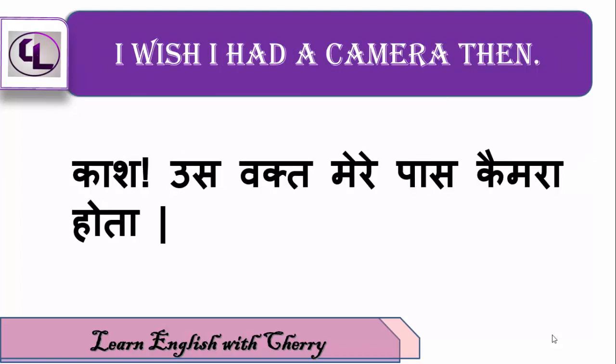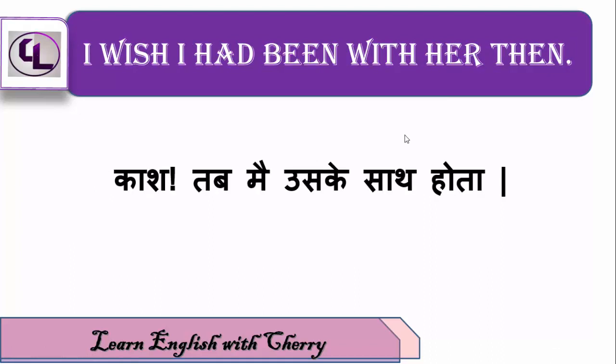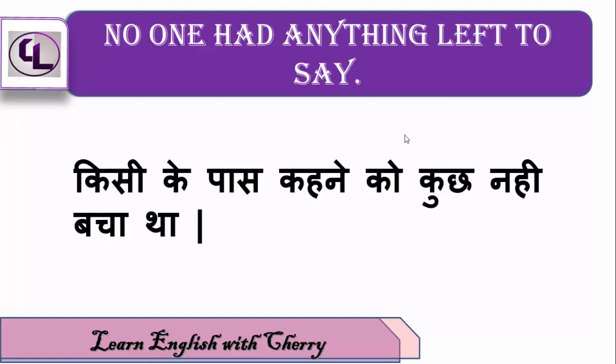काश उस वक्त मेरे पास camera होता — I wish I had a camera then. काश तब मैं उसके साथ होता — I wish I had been with her then. किसी के पास कहने को कुछ नहीं बचा था — No one had anything left to say. यहाँ had और left — यह again past perfect आ गया।